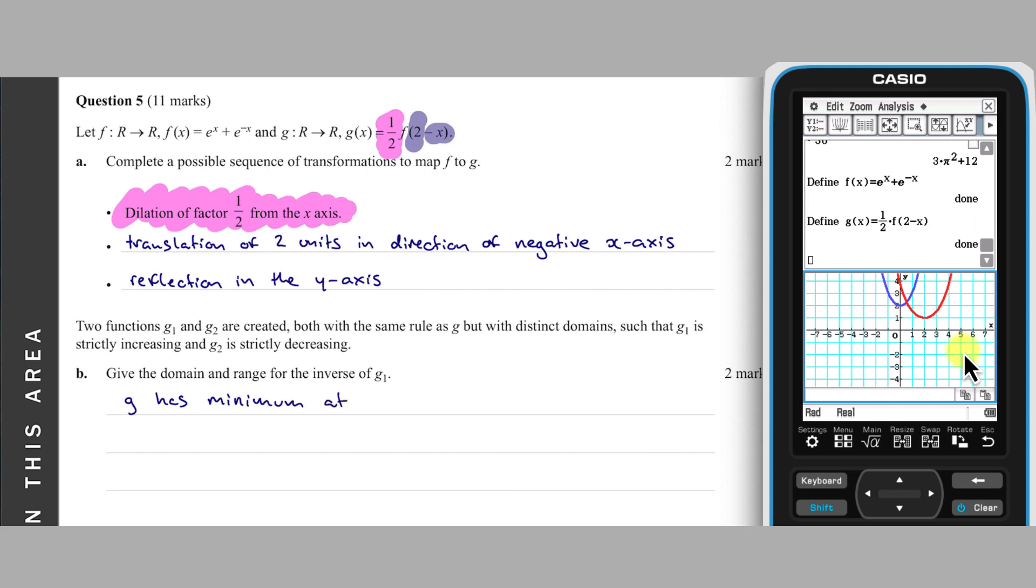Based on the graph of G and what we know about its turning point, the domain of G1 is X greater than or equal to 2 and its range is Y greater than or equal to 1. Therefore, G1 inverse has a domain of X greater than or equal to 1 and Y greater than or equal to 2.